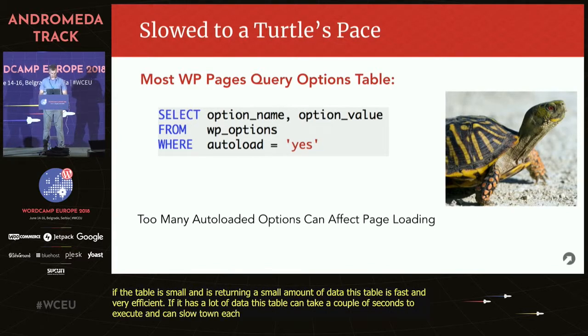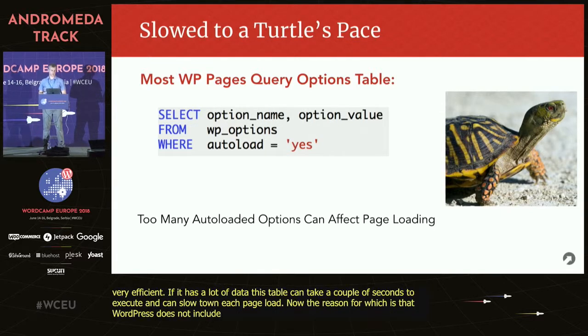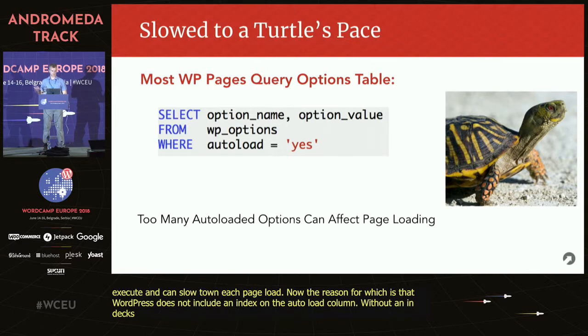The reason for this is that WordPress doesn't include an index on the autoload column. Without an index, MySQL has to look at each and every row as it's returning data. So if you have a large data set, that can take a while.